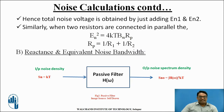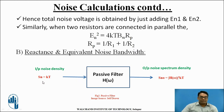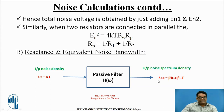The second method is reactance and equivalent noise bandwidth. As shown in the block diagram, there is a passive filter with an input noise density and at its output we get an output noise spectrum. Sn is the input noise density given by Sn = KT, where K is Boltzmann constant and T is temperature. The output is denoted by Sn0, given by |H(ω)|² × KT, where H(ω) represents the real and imaginary parts of the passive filter.